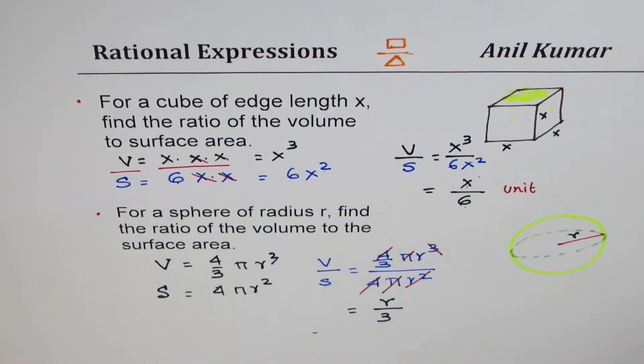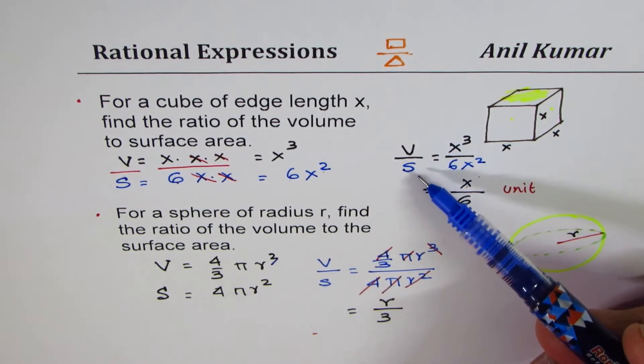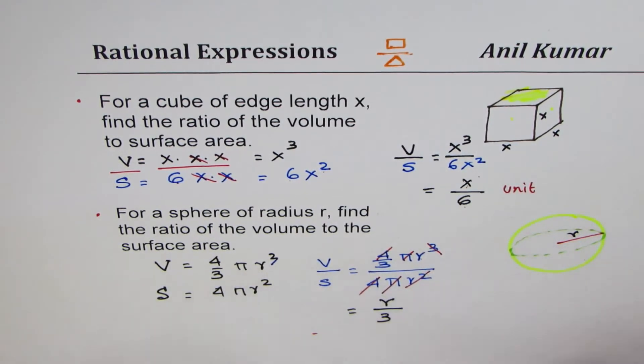So that is how you can calculate the ratio of volume and surface area. These are the rational expressions. Whenever you have something in the numerator divided by something in the denominator, then we get a rational expression. So I hope that makes sense.